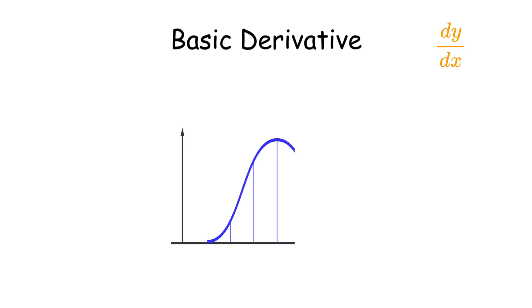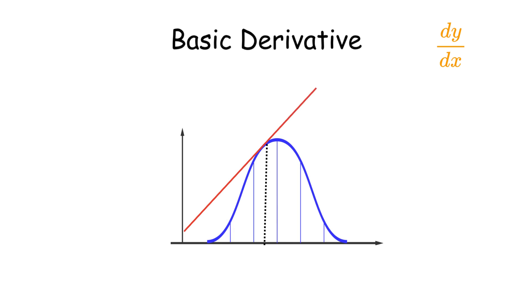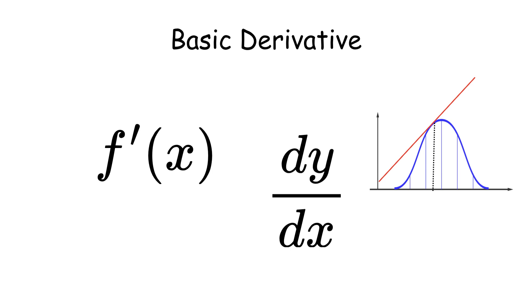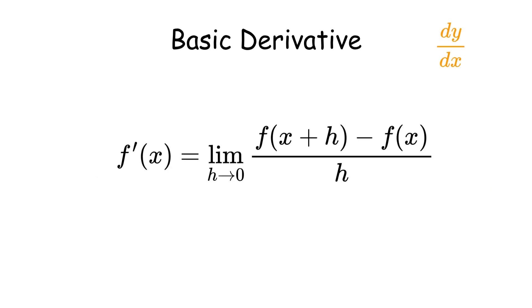The basic derivative, often called the first derivative, measures the instantaneous rate of change of a function at a given point. It captures the slope of the tangent line. It is denoted as f prime of x, or dy over dx, and is defined by the limit.